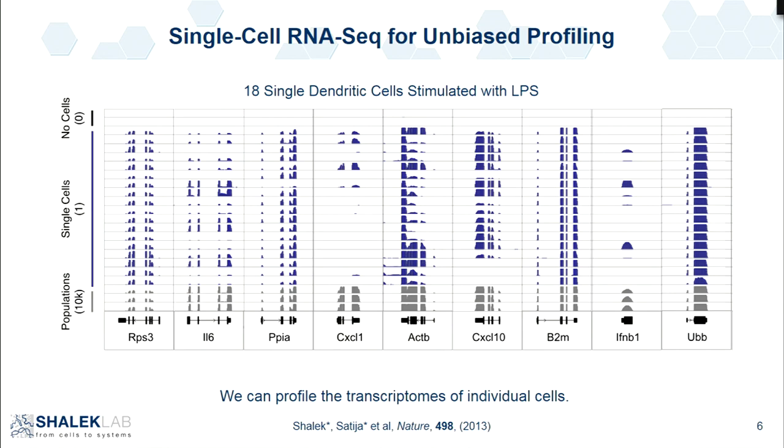Populations look very clean and reproducible. Fortunately, if you don't put any cells into your tube, you don't get any reads mapping to the mouse genome.